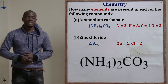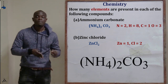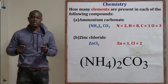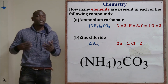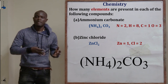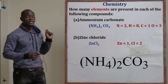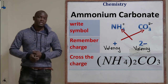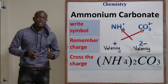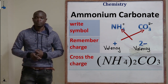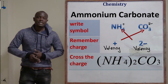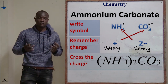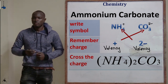To find how many elements are in ammonium carbonate, we must first write it in chemical formula form, because using only the word formula makes it difficult to identify the elements. We must break it down into its chemical formula. To do this, we identify the radicals in the compound. In Form 2, we learned that radicals are elements or atoms reacting as a unit.